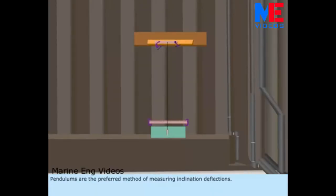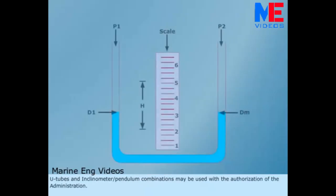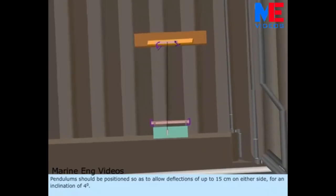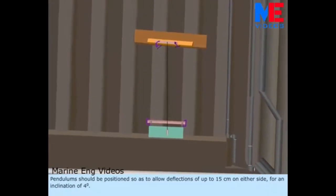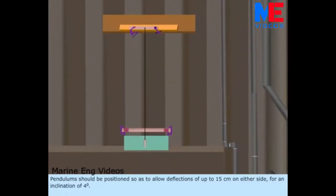Pendulums are the preferred method of measuring inclination deflections. U-tubes and inclinometer or pendulum combinations may be used with the authorization of the administration. Pendulums should be positioned so as to allow deflections of up to 15 cm on either side for an inclination of 4 degrees.